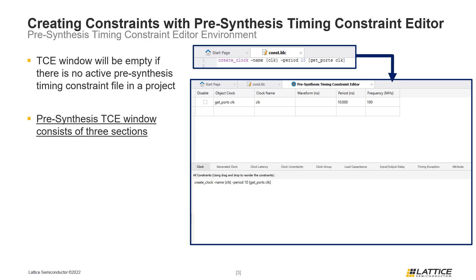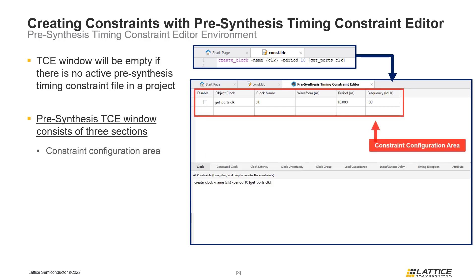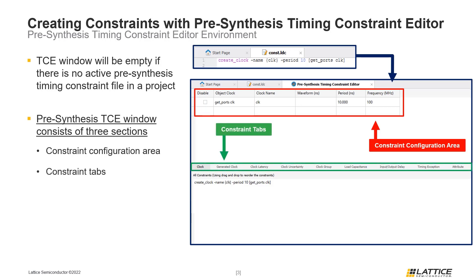As can be seen from the example on the slide, the pre-synthesis timing constraint editor window contains several sections. At the top of the window is the constraint configuration area, which is used to create pre-synthesis timing constraints. Underneath the constraint configuration area are the constraint tabs. Each tab corresponds to a different type of pre-synthesis timing constraint that can be created. Clicking any of these tabs will update the contents of the constraint configuration area, allowing users to create a pre-synthesis constraint of that type.